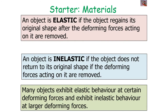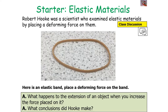Many objects have an elastic region and an inelastic region depending on the magnitude of the deforming force. At lower deforming forces, objects act elastically, while at higher forces, objects act inelastically. Robert Hooke was a scientist who examined elastic materials by placing a deforming force on them. What happens to the extension of an object when you increase the force placed upon it, and what conclusions could Hooke make from this?